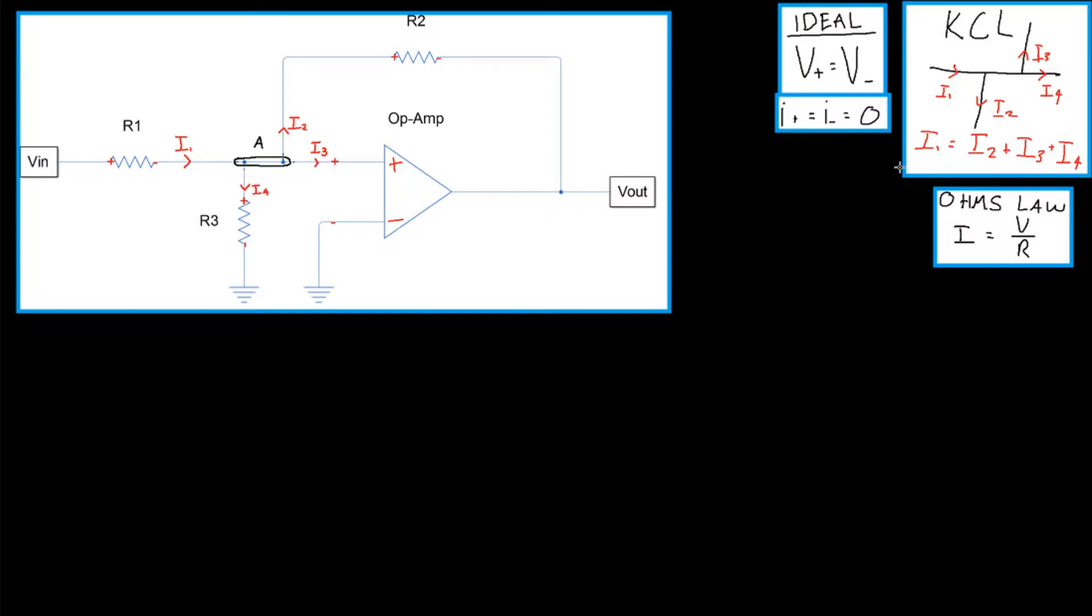In our example case up here, I1, which is the current entering the node, equals I2 plus I3 and I4 as they are all leaving. The second is Ohm's law, which simply relates the current which is traveling through a component equal to the voltage drop over that component divided by the resistance of the component.